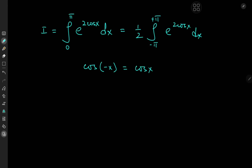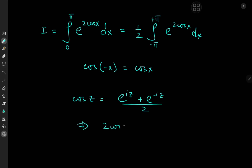And now to reference some beautiful complex analysis. How exactly is the cosine function defined in complex trigonometry? We have cosine z defined as e to the iz plus e to the negative iz divided by two, which implies that two times cosine z — that's the argument of the exponential function in the integrand — equals e to the iz plus e to the negative iz.